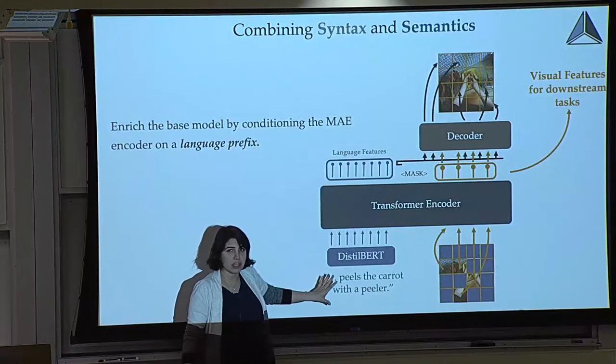Combining all three objectives, we train the model on data. The data we chose were human videos — the Something-Something dataset, an egocentric view of humans doing various tasks like peeling a carrot. There's a much larger dataset called Ego4D, and in the second version of Voltron we've trained on a subset of Ego4D and other available datasets. Training on large amounts of human videos under these three objectives gives us a model that can be used and fine-tuned for various downstream tasks.